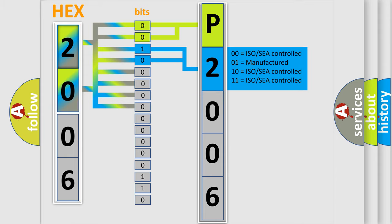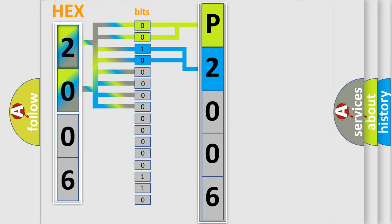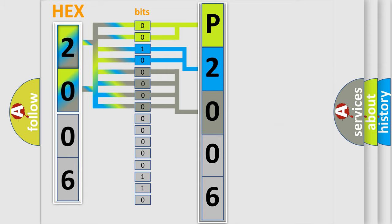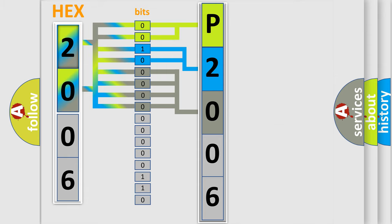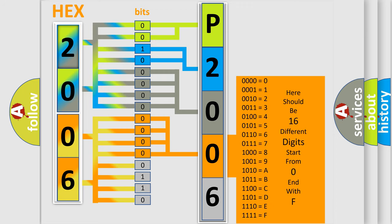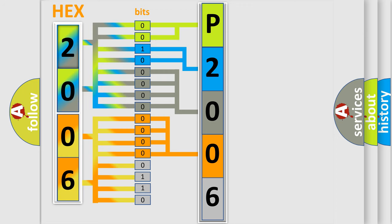The last bits of the first byte define the third character of the code. The second byte is composed of a combination of eight bits. The first four bits determine the fourth character of the code, and the combination of the last four bits defines the fifth character. A single byte conceals 256 possible combinations.